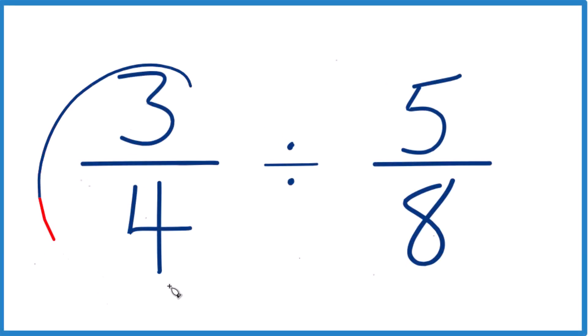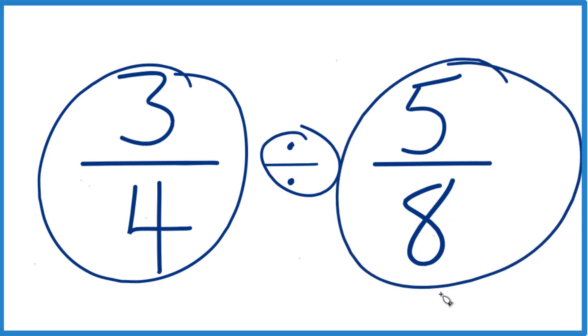So in this video, we're going to take 3 fourths and divide 3 fourths here by 5 eighths. Here's how you do it.